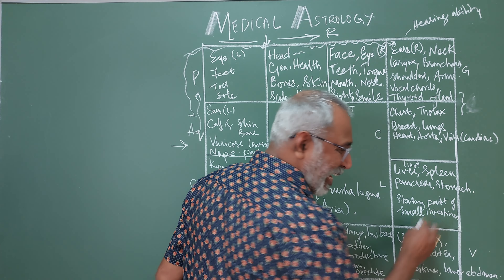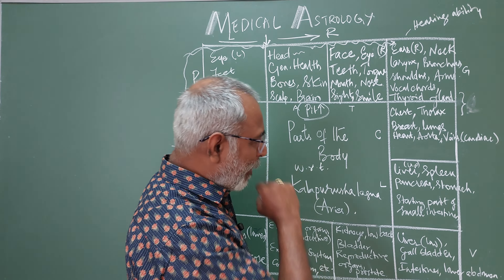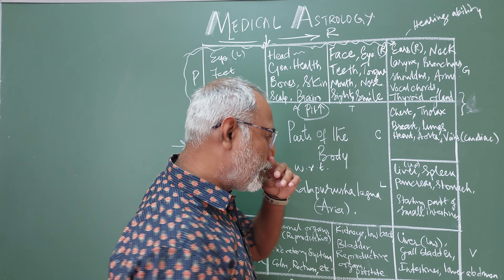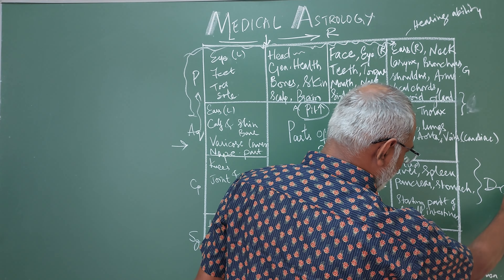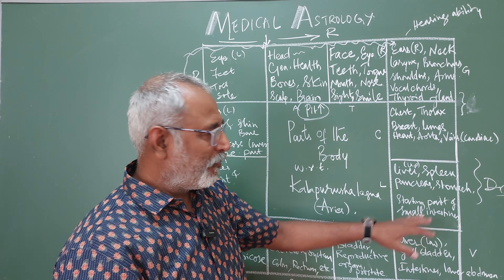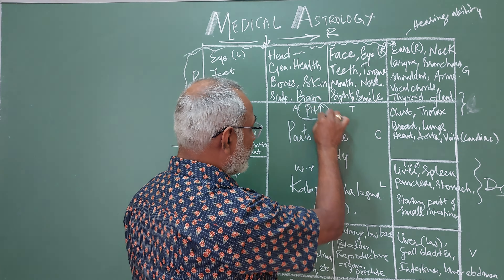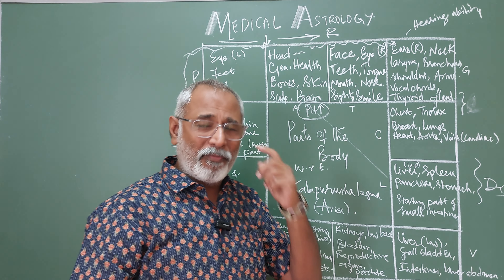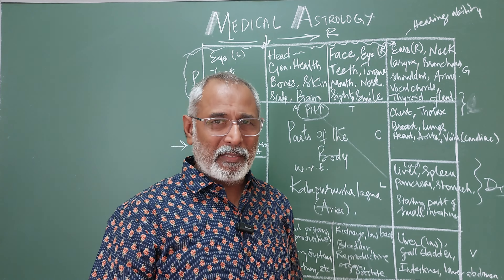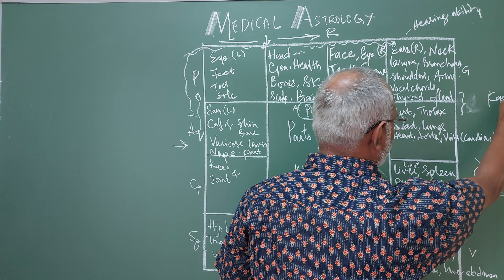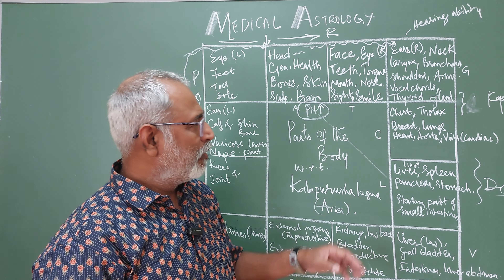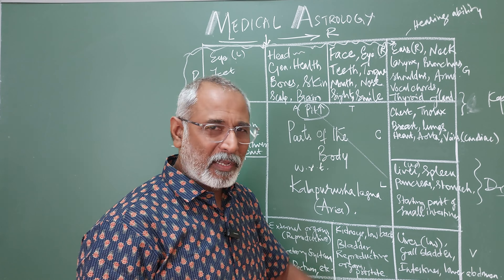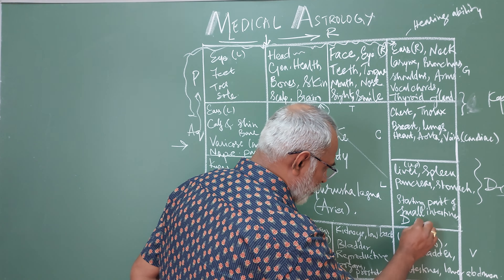The fifth house from the Kala Purusha gives you the upper part of the liver, the spleen, the pancreas, the stomach, and the starting part of the small intestine. Somewhere in between you have the diaphragm. The diaphragmatic breathing that people teach is all because of this one-five combination. These organs become very happy if you do what we call Kapalabhati — a very good pranayama breathing exercise. When you do that, it invigorates and gives a lot of energy to this part of the body. We also have the small intestines — the duodenum, the ileum, and the jejunum.